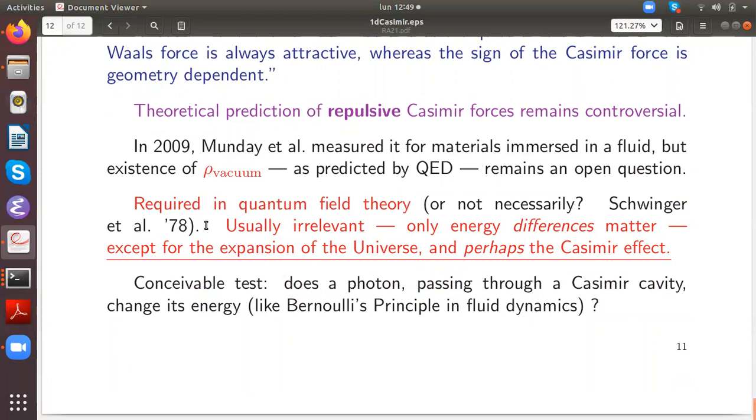It seems to be required in quantum field theory, although for instance Schwinger performed the calculation with a source-fields technique which does not seem to require it. Usually the question is irrelevant. Usually we only care about energy differences, and exceptions are the accelerated expansion of the universe and perhaps, depending on the interpretation, the Casimir effect. A conceivable test would be to send the photon through a Casimir cavity and see if it changes its energy due to the vacuum energy difference. So that would be like Bernoulli's principle in fluid dynamics.